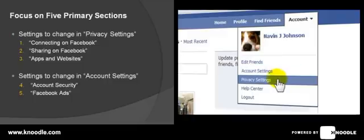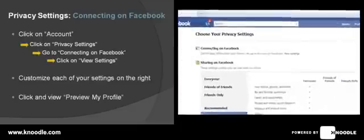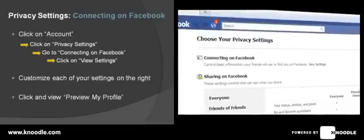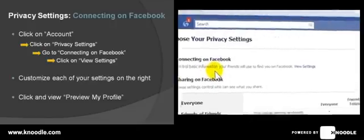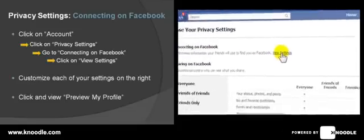First of all, we'll click on the privacy settings link. We're going to recommend some settings which are a common sense middle ground that will allow you to leverage your community and allow you to be found through your friends. So first, we'll go over to the section 'Connecting on Facebook,' which determines how people can find you on Facebook and how you can connect with them. Move over to the right and click on 'View Settings.'